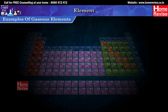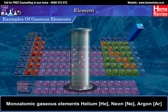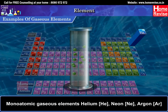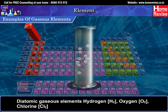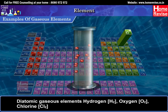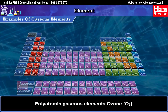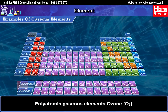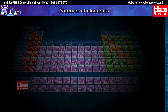Examples of gaseous elements: Monoatomic gaseous elements — Helium (He), Neon (Ne), Argon (Ar). Diatomic gaseous elements — Hydrogen (H2), Oxygen (O2), Chlorine (Cl2). Polyatomic gaseous elements — Ozone (O3).